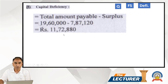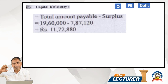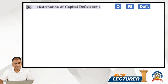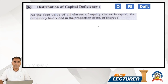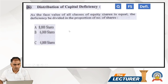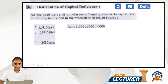The deficiency is divided among A, B, and C category shares. Since the face value of all equity shares is equal, the deficiency is divided in proportion to the number of shares. The number of shares are: A = 8,000, B = 6,000, C = 4,000. So the ratio is 8,000 : 6,000 : 4,000, which simplifies to 4 : 3 : 2.